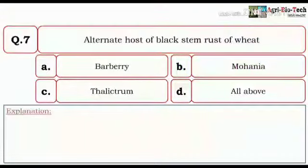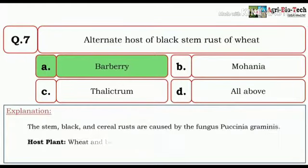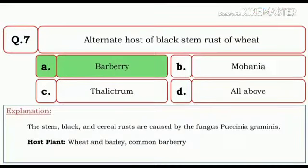Next question. Alternate host of black stem rust of wheat is Barberry, Mahonia, Thalictrum, and all of the above. So here the correct answer is Barberry. The stem, black, and cereal rusts are caused by fungus Puccinia graminis and its host plants are wheat and barley and common barberry.